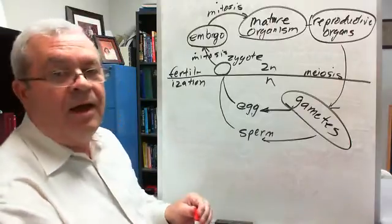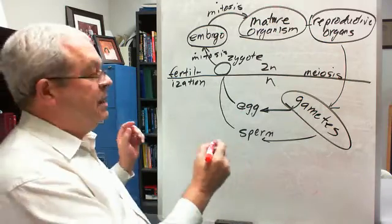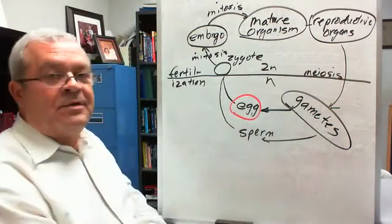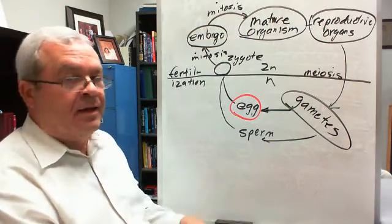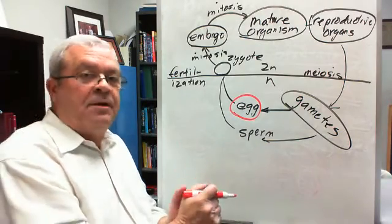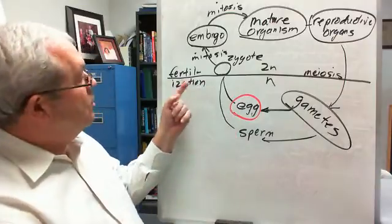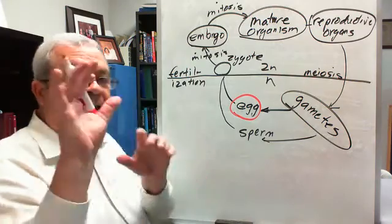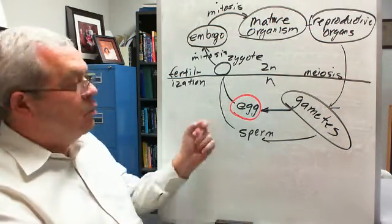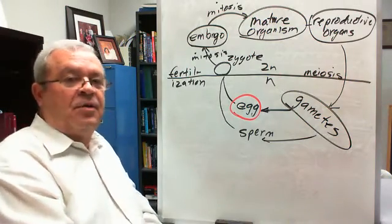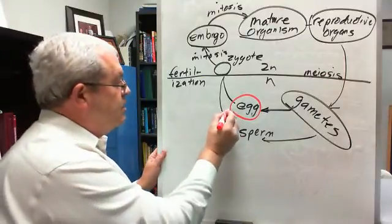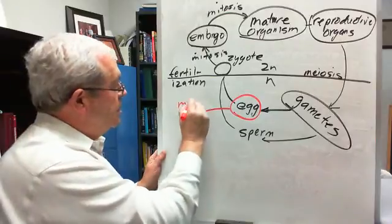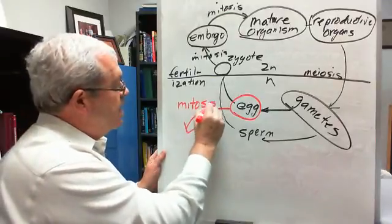Where does parthenogenesis begin? It begins with an egg cell. And what's the normal thing that happens to egg cells in the basic animal kingdom life cycle? Egg meets sperm — fertilization, right? But here we're talking about parthenogenesis, virgin birth, no fertilization. What does that egg do if it doesn't get fertilized? It takes a detour. It divides by mitosis.